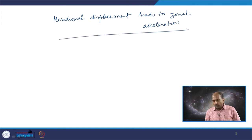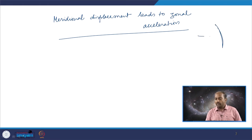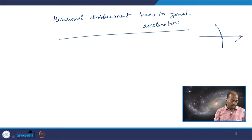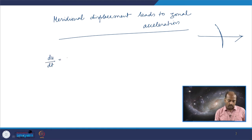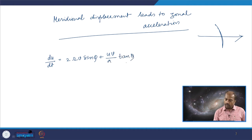Now let us consider the displacement of an object in the vertical direction. The object is in the same frame of reference, moving with respect to the earth at velocity u. We will now displace the object vertically upward.